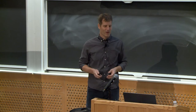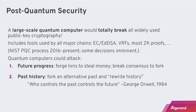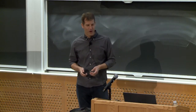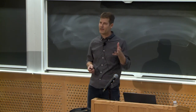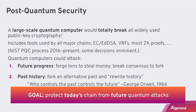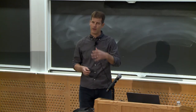As George Orwell put it in 1984: whoever controls the past controls the future. Our goal is to protect today's chain — the integrity of the chain being developed today and in the near future — from potential future quantum attacks. We don't know when they're coming or if they're coming, but we need to be prepared and protect today's assets against these future attacks.